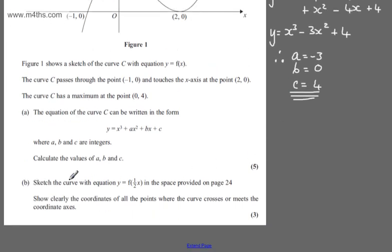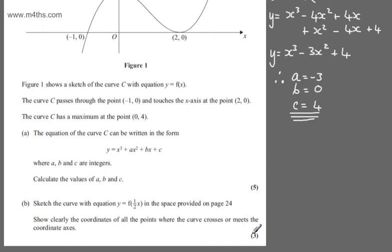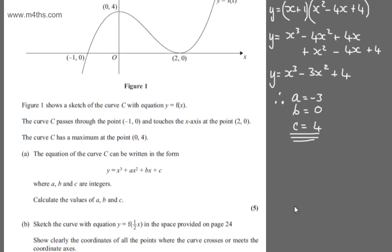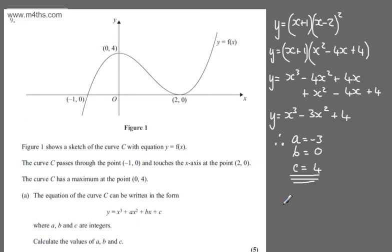In part b, it says sketch the curve with equation y equals f of 1 half x in the space provided on page 24. Show clearly the coordinates of all of the points where the curve crosses or meets the coordinate axis. The question carries 3 marks. I'm going to do that just here, as I don't have page 24 on the screen.